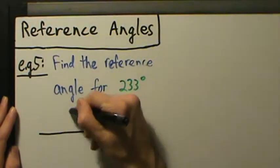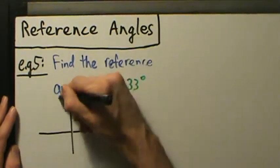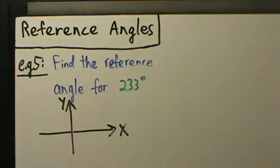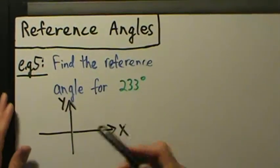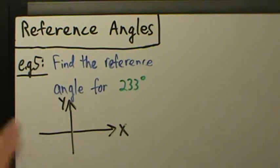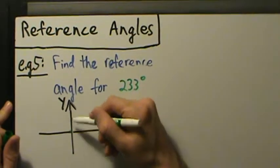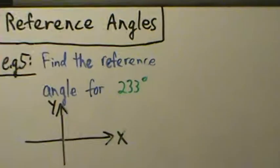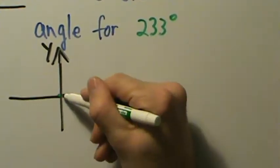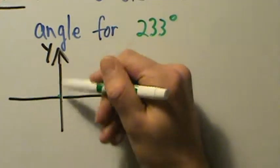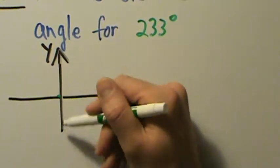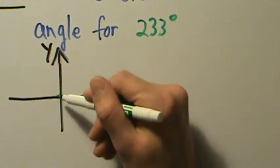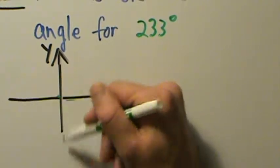Drawing it might be kind of weird — this is where it could get a little more complicated, because since it's not a special angle, we can't really consult the unit circle and see where it is. But what we want to keep in mind is that for angles in standard position: zero degrees is right here, 90 degrees is up here, 180 degrees is over here, 270 degrees is down here. So we do want to keep those in mind: zero, 90, 180, 270, 360 degrees.